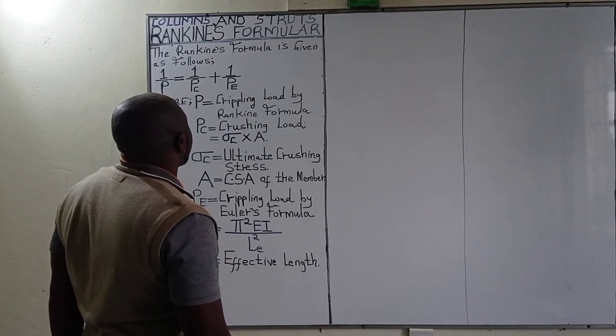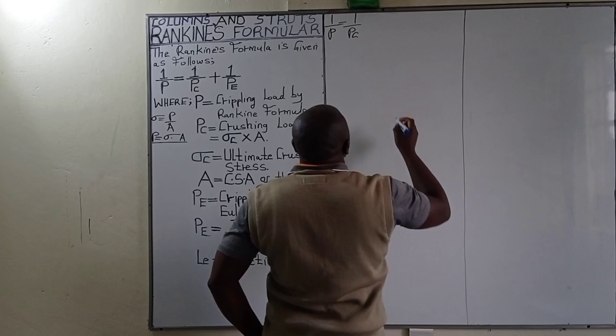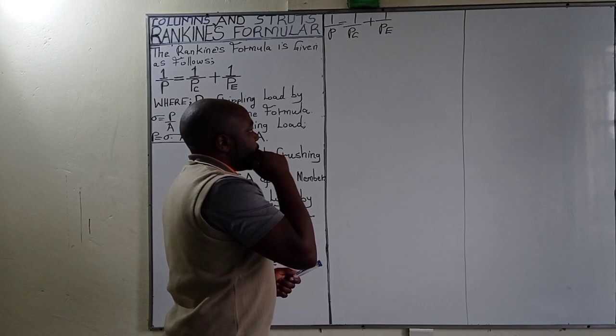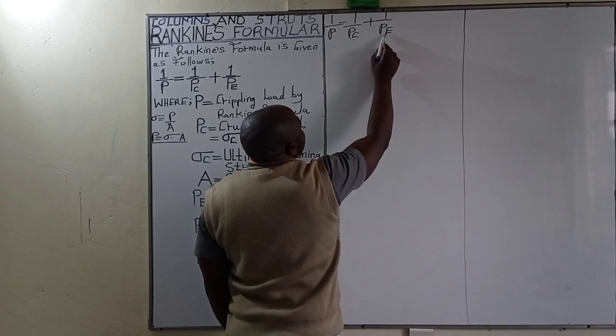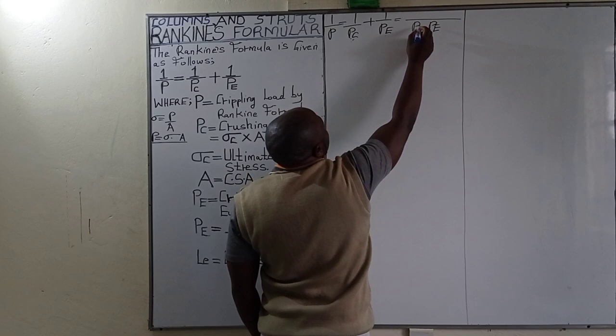Coming back to the Rankine's formula, we have 1 over P equal to 1 over Pc plus 1 over Pe. When we add these fractions, the common denominator is Pc times Pe, giving us Pe plus Pc all over Pc times Pe.